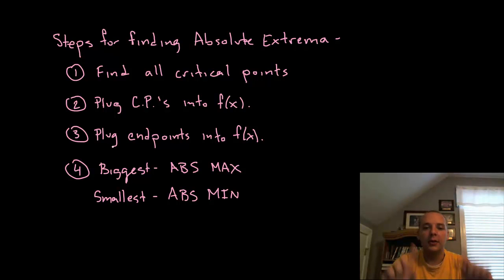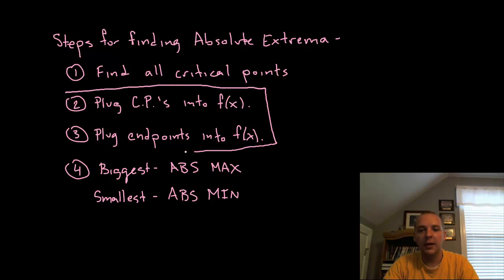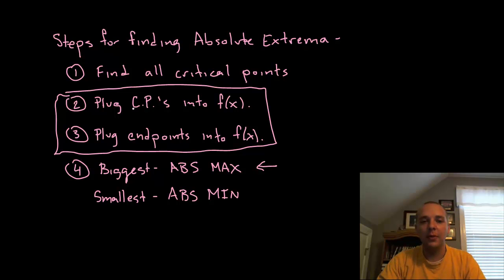Third step take your two endpoints, the leftmost and rightmost endpoints, stick that into the function. And what you're doing in these middle two steps in effect is pretty much playing king of the hill. You're just plugging them all in and saying who's the biggest out of all those or who's the smallest. And the biggest number turns out to be your absolute maximum because it can't be anybody else. It will have to be one of these two guys either a critical point or an endpoint.